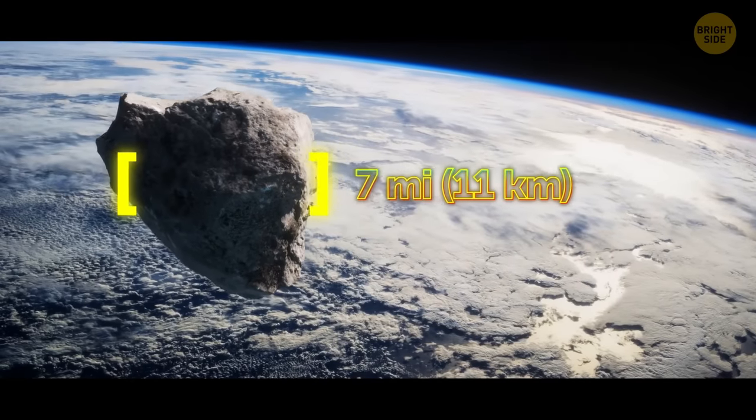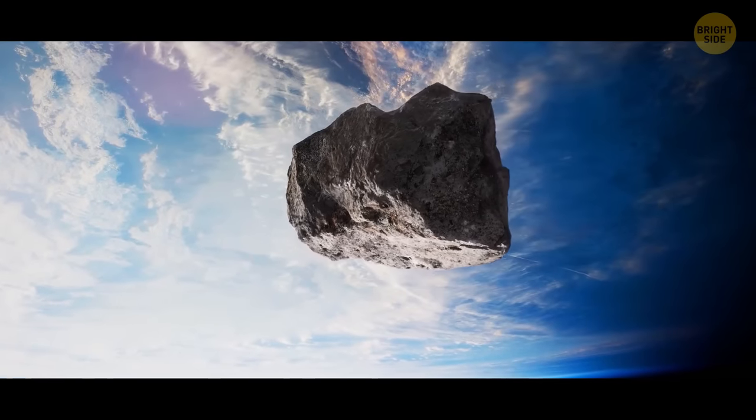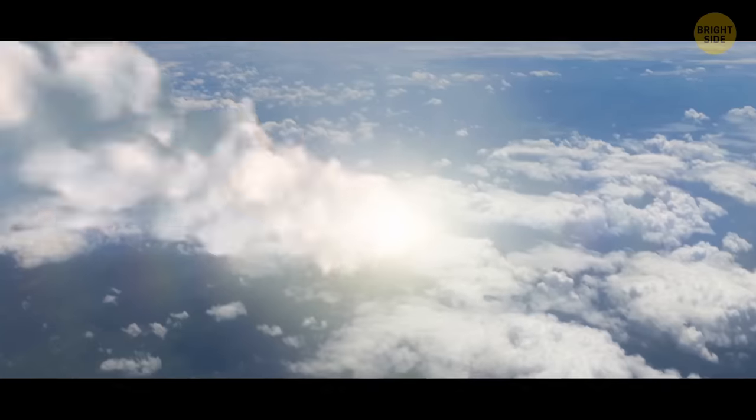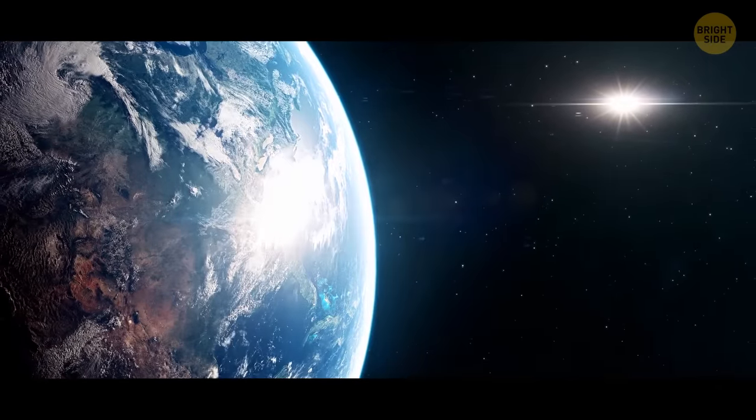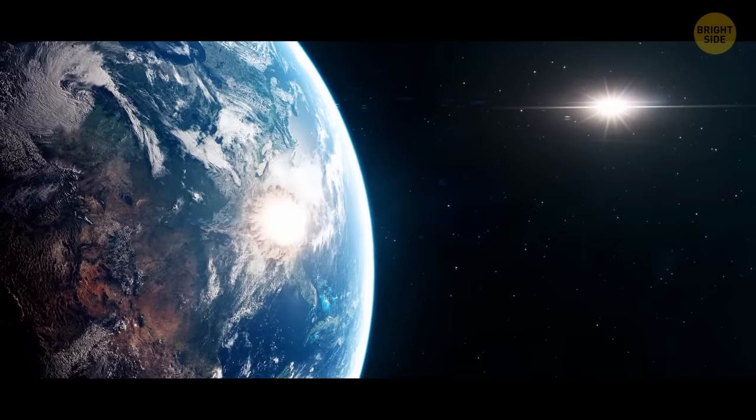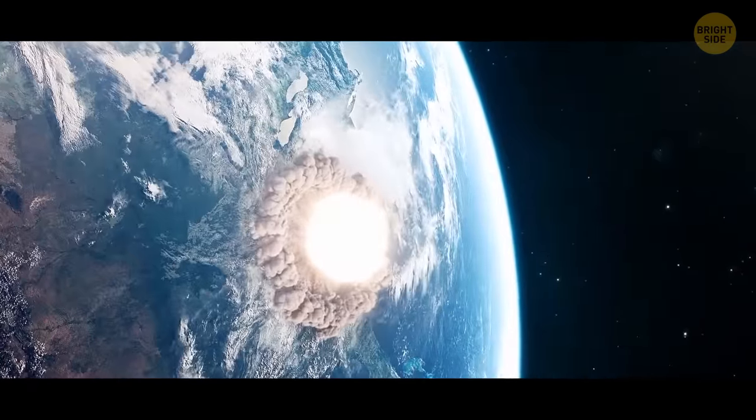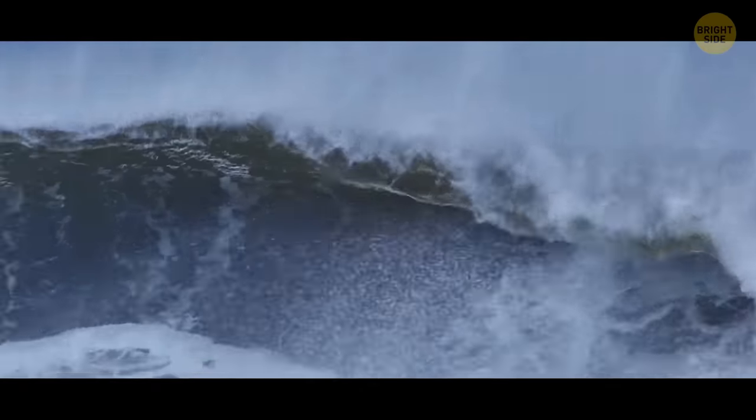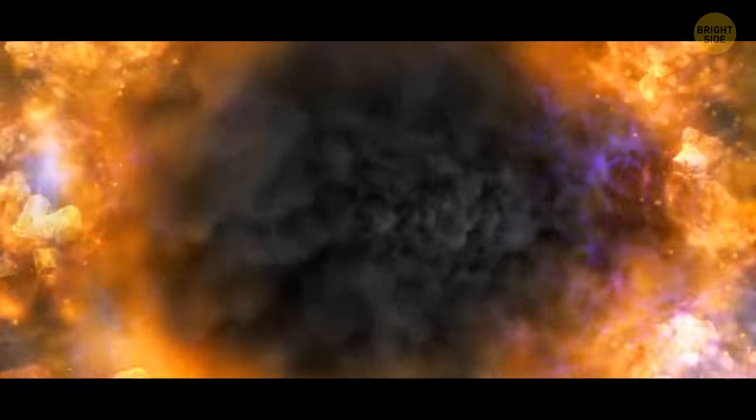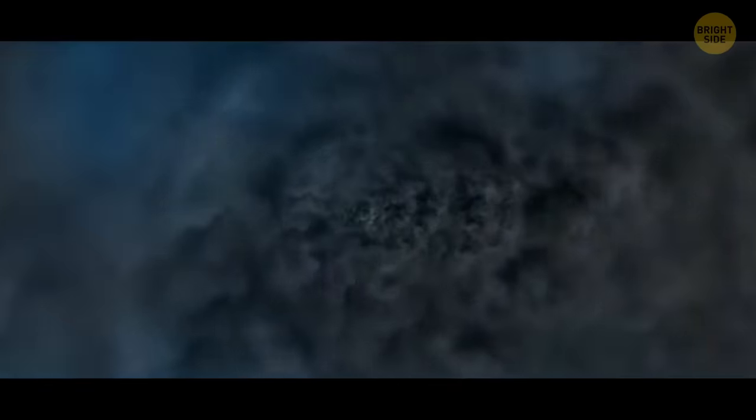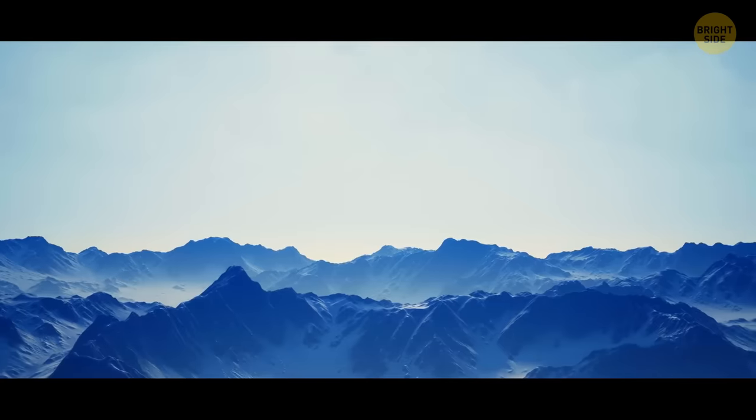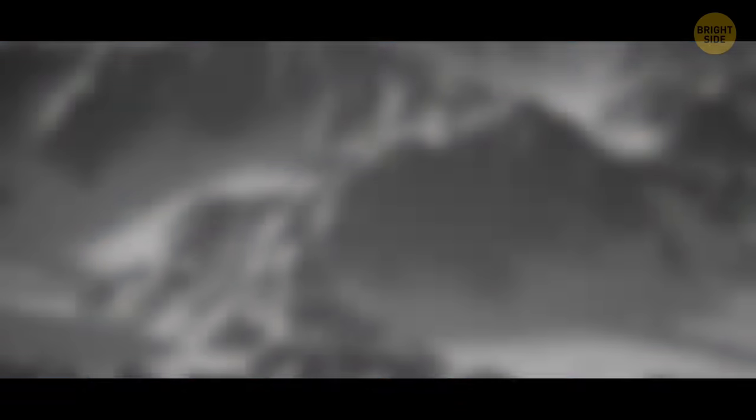An object 7 miles across in diameter smashed into our planet. It was going 120 times faster than the fastest car today. Over 900,000 miles all around the impact site, everything caught fire. A huge tsunami swept across the world's oceans. Billions of tons of dust and sulfur rose into the sky and blocked the sun's warm rays. A global cooling came to Earth.